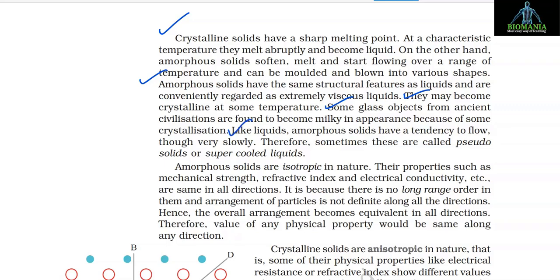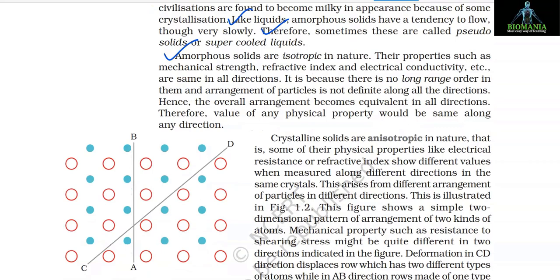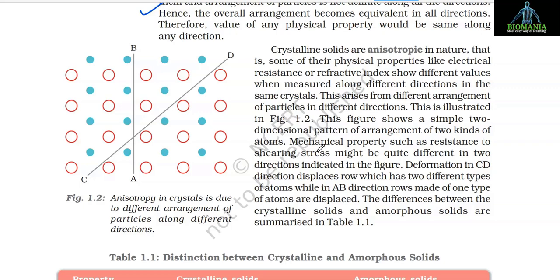Like liquids, amorphous solids have a tendency to flow very slowly and are therefore sometimes called pseudo solids or supercooled liquids. Amorphous solids are isotropic in nature — their properties such as mechanical strength, refractive index, and electrical conductivity are the same in all directions, because there is no long range order and the arrangement of particles is not definite along all directions.